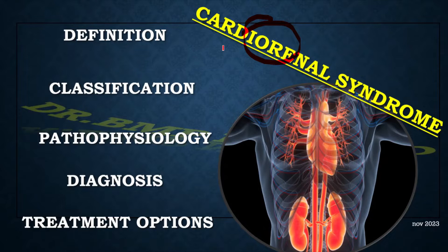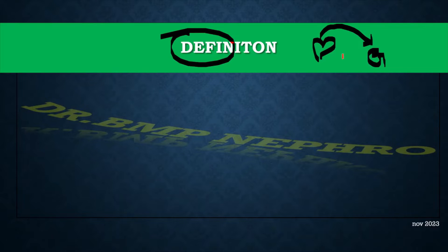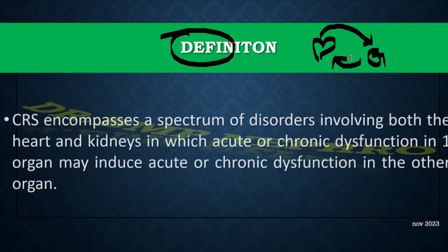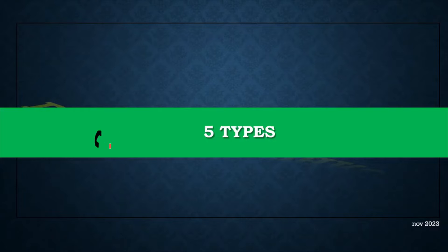Starting with the definition — what is cardiorenal syndrome? In simple terms, because of one organ's dysfunction there will be dysfunction in another organ. Either the heart causes kidney dysfunction, or the kidney causes heart dysfunction. In technical terms, cardiorenal syndrome, also called CRS, is a spectrum of disorders involving both the heart and kidney in which acute or chronic dysfunction of one organ may induce dysfunction in the other organ.